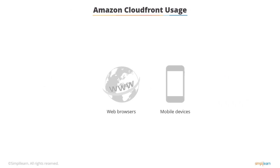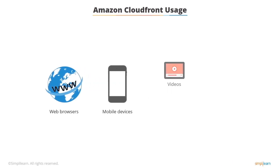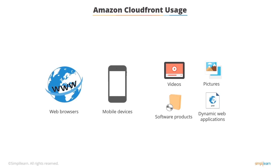Amazon CloudFront supports users requesting data using both web browsers and mobile devices. Unlike Amazon Glacier, the solution is an ideal choice to distribute frequently accessed static and dynamic content, such as videos, pictures, software products, and dynamic web applications over HTTP.